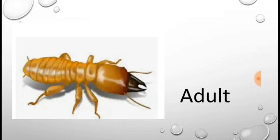The last stage is the adult. This is an adult insect. So every insect, or most insects, go through four stages in their lives.